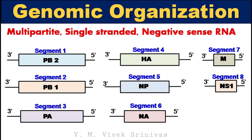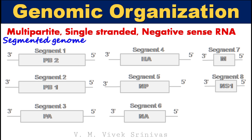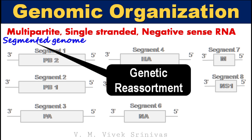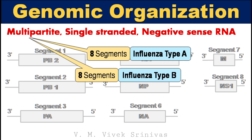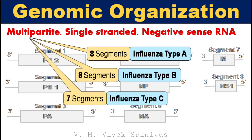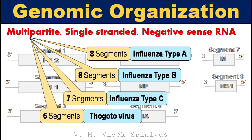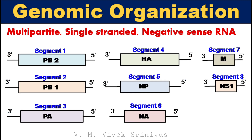Genomic organization: The genome is multipartite, that is segmented, single-stranded, and negative-sense RNA. This segmented genome may result in genetic reassortment. The influenza type A virus possesses 8 segments, type B virus possesses 8 segments, type C virus possesses 7 segments, and thogatavirus possesses 6 segments. Our interest is on influenza type A virus, which possesses 8 segments.